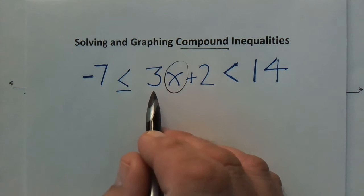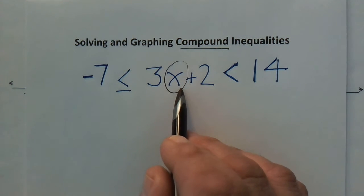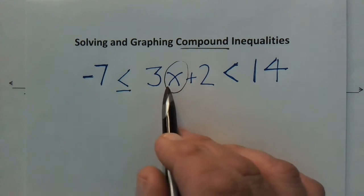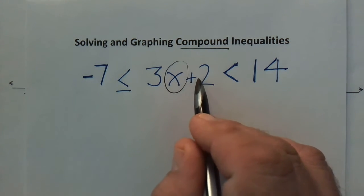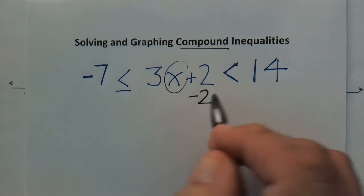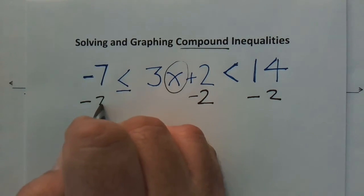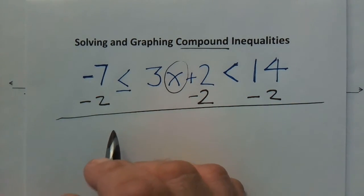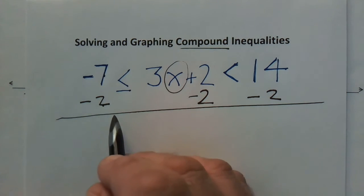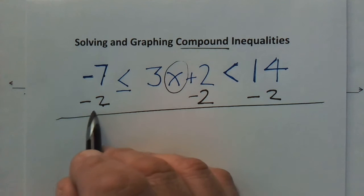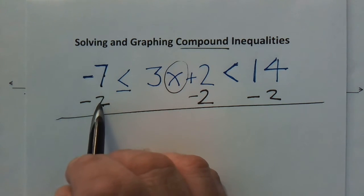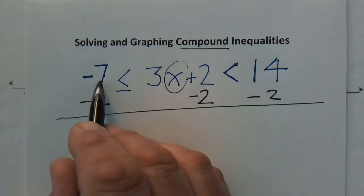The first thing we want to do is isolate x by removing the loose number, which is the plus 2. Since it's adding 2, I'm going to subtract 2 — doing the opposite of addition. If I do it to one side, I have to do it to all three sides across the whole expression. Negative 7 minus 2 more gets more negative — think of it like being overdrawn at the bank by seven dollars and spending two more. You go further in the hole, so negative 7 minus 2 is negative 9.